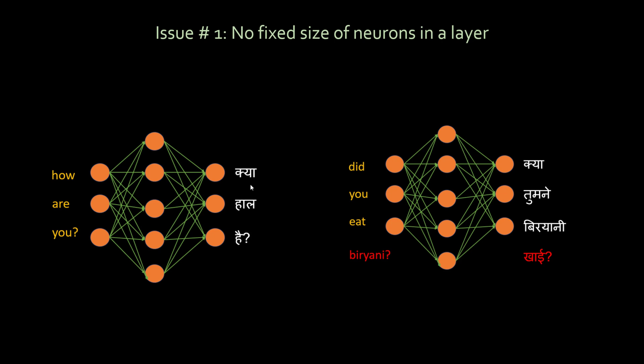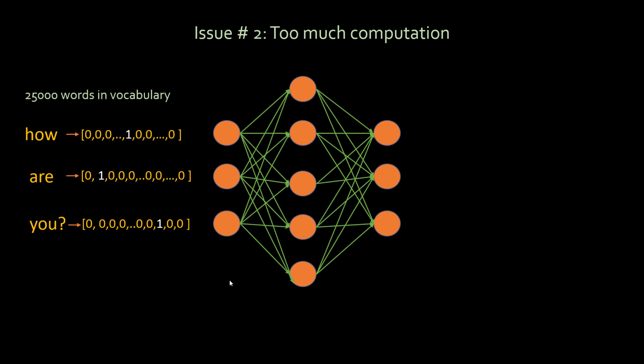Once you build this network, what if your sentence size changes? You might be inputting different sentence sizes, and with a fixed neural network architecture that won't work because you have to decide how many neurons are in the input and output layer. With language translation, the number of neurons becomes a problem. One might argue to just decide a huge size — say 100 neurons — and for a short sentence like 'did you eat biryani,' four neurons are used and the remaining 96 are set to zero.